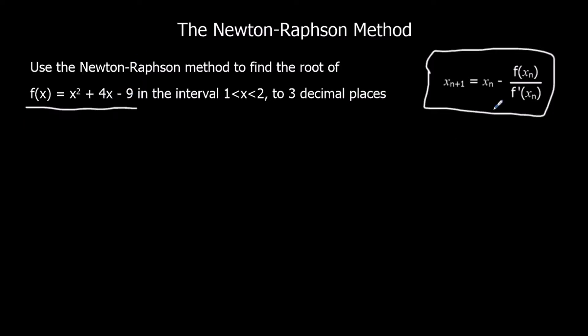And we need the derivative of the function. f'(x) is, if we differentiate it, we get 2x + 4. We've been told our root is in the interval 1 and 2, between 1 and 2. And we need it to 3 decimal places.